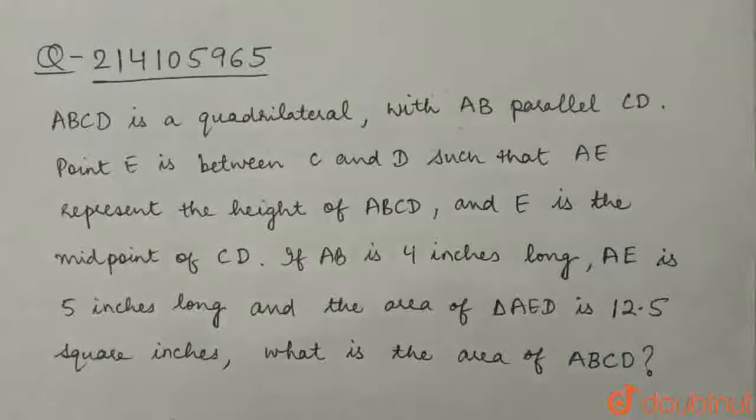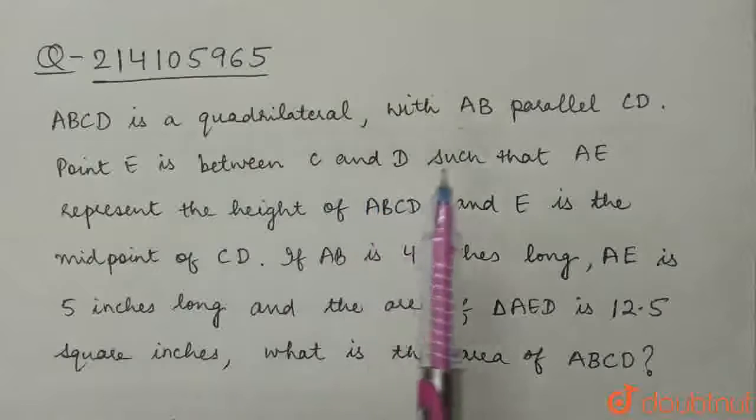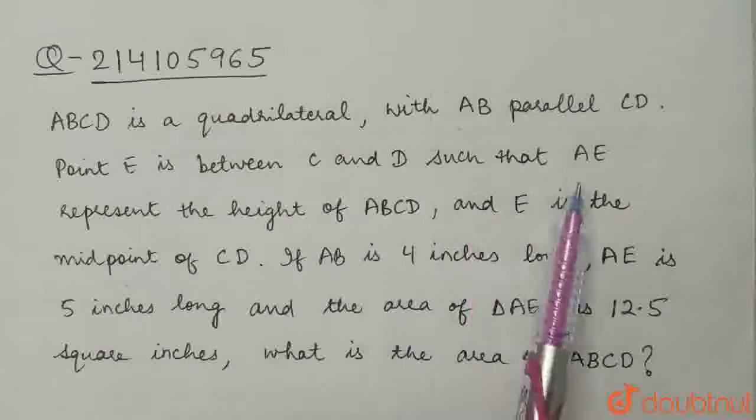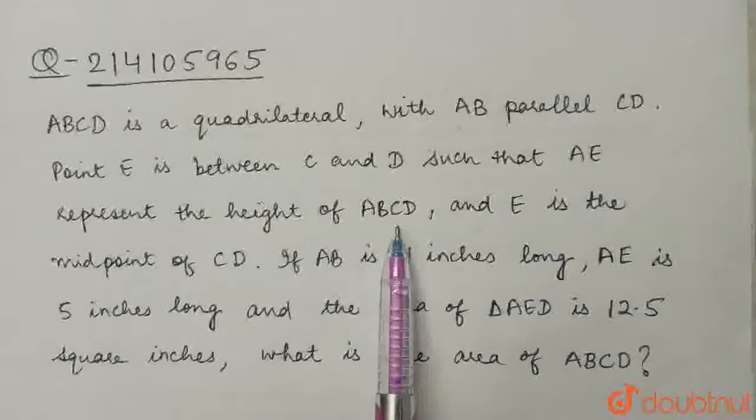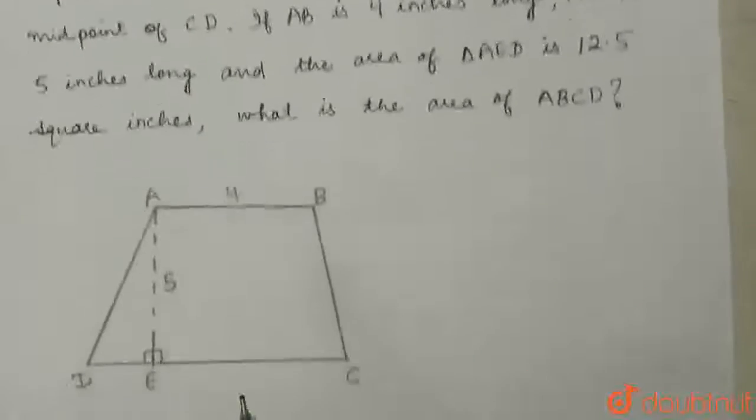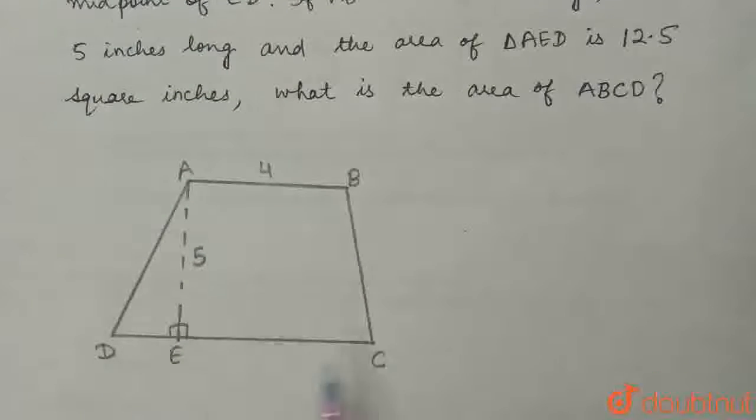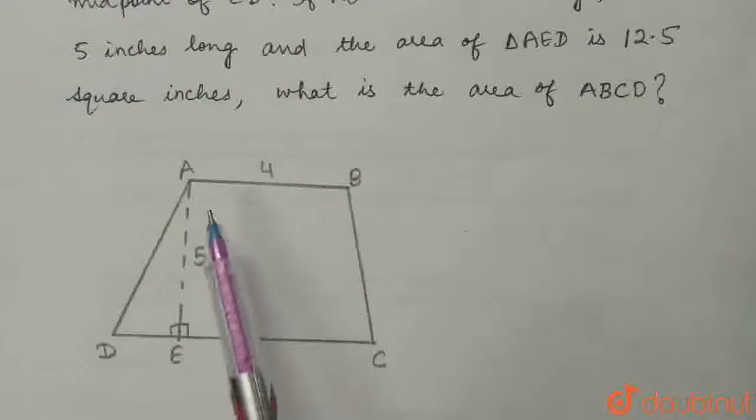Our question is: ABCD is a quadrilateral with AB parallel to CD. Point E is between C and D such that AE represents the height of ABCD. This is the figure given to us. AB is parallel to CD, E is the midpoint of CD, and AE represents the height of the quadrilateral.